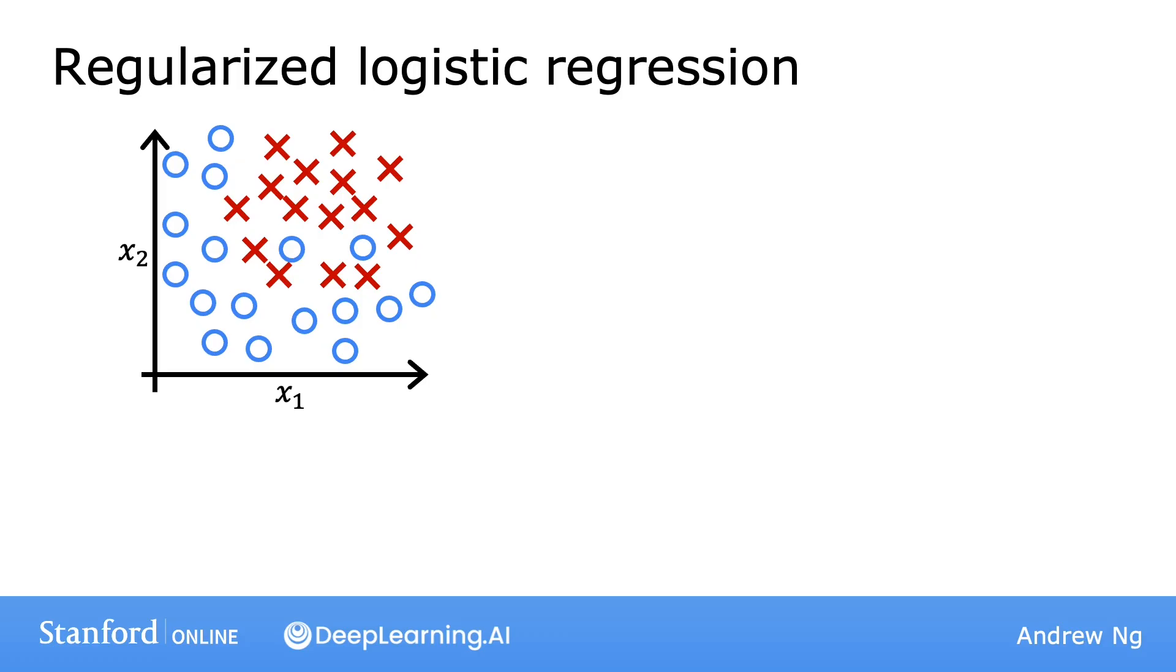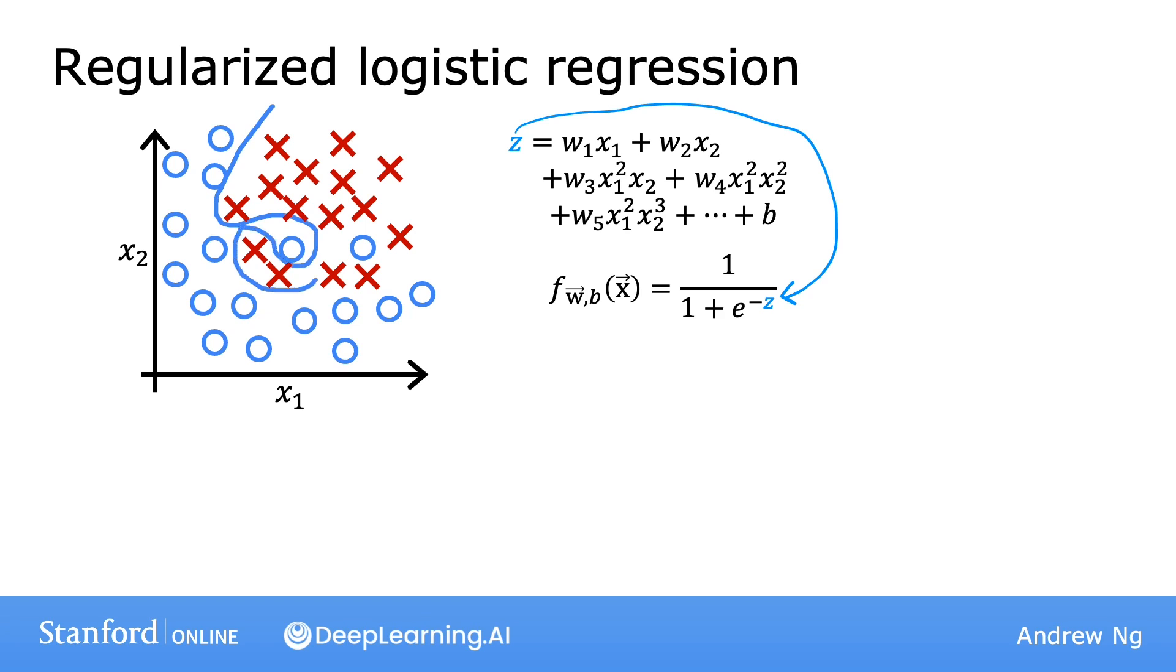Here's the idea. We saw earlier that logistic regression can be prone to overfitting if you fit it with very high-order polynomial features. Here, z is a high-order polynomial that gets passed into the sigmoid function to compute f. In particular, you can end up with a decision boundary that is overly complex and overfits this training set. More generally, when you train logistic regression with a lot of features, whether polynomial features or some other features, there can be a higher risk of overfitting.